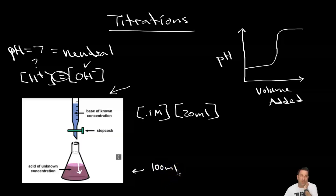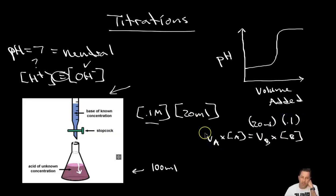In titrations we have a math equation that says the volume of the acid times the concentration of the acid is equal to the volume of the base times the concentration of the base. And I know most of these. I know the volume of the base is 20 milliliters. I know the concentration of the base was 0.1. And I know the volume of the acid was 100 milliliters.